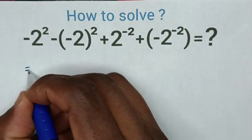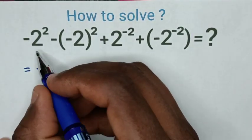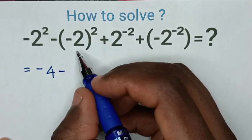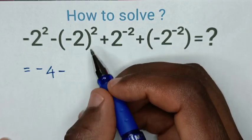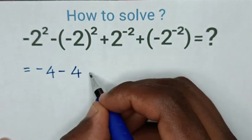So, it will be equal to, from here in negative, then 2² is 2 times 2 which is 4, minus, from here negative 2 inside the bracket, power of 2, is same as negative 2 times negative 2 which is positive 4, then plus,